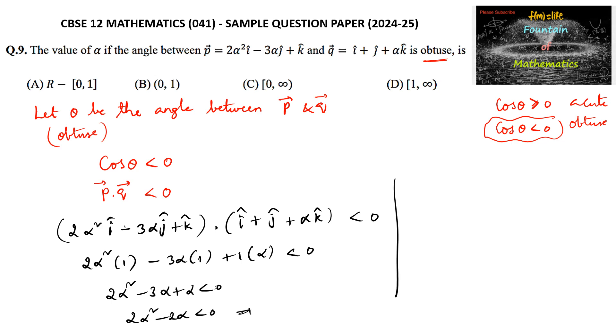Which implies that 2α taken common: α(α - 1) is less than 0. By using the wave curve method, α = 0 and α = 1.